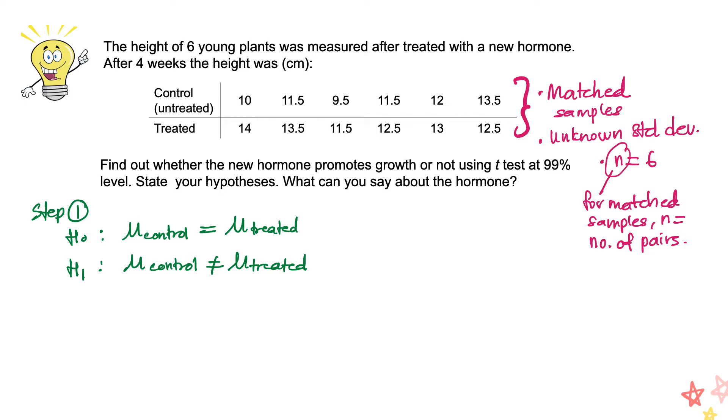Whereas the alternative hypothesis can be written as the mu of the height of the control samples is not equal to the mu of the height of the treated samples. So that is the first step.